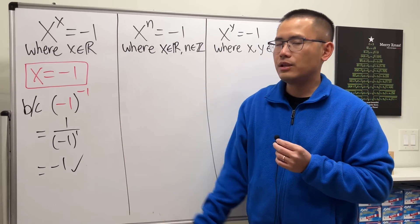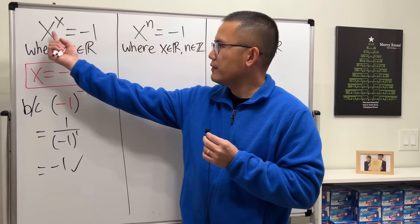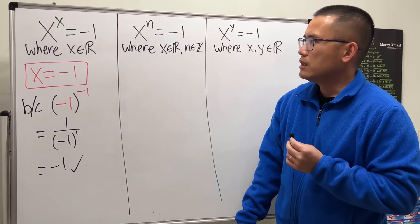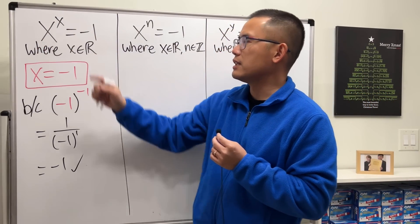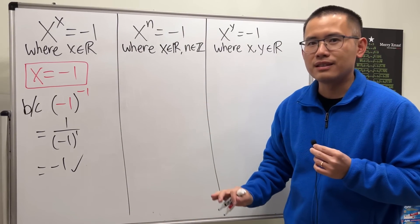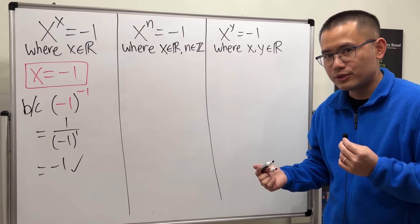And that is the only solution. What other candidates can you have? If you have x equal to 1 to 1, it's positive 1. It's not negative 1. If you try 17 raised to the 17th power, I guarantee you, it's not negative 1. Pi to the pi, it's not negative 1, so that's it. Okay, next, though, we have more solutions.